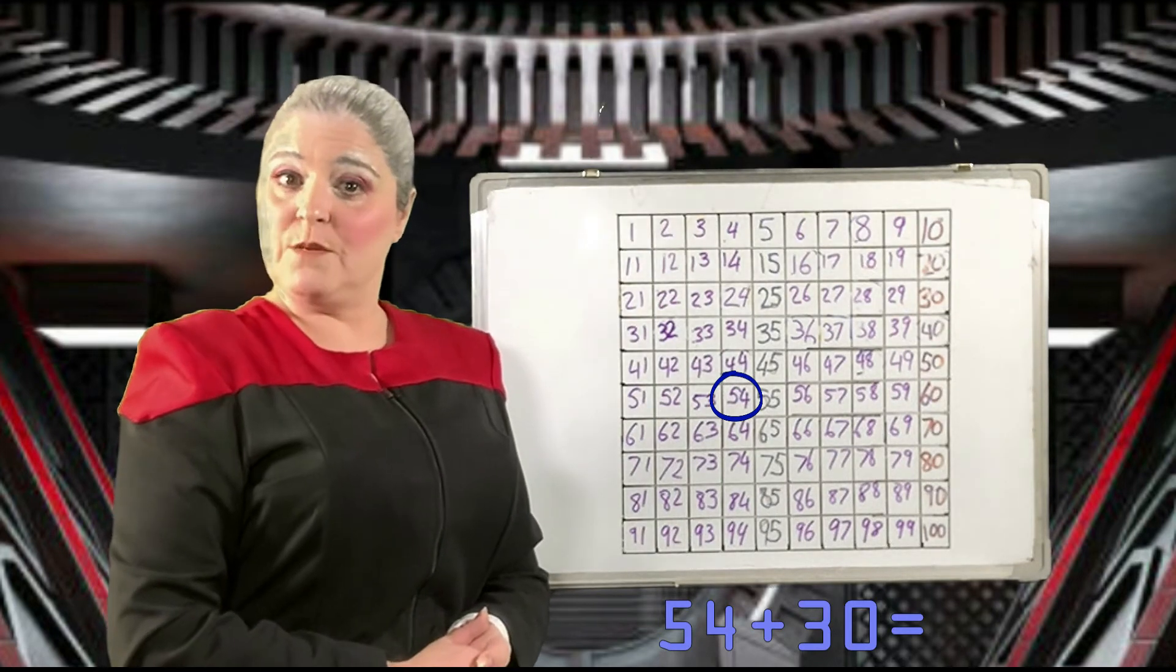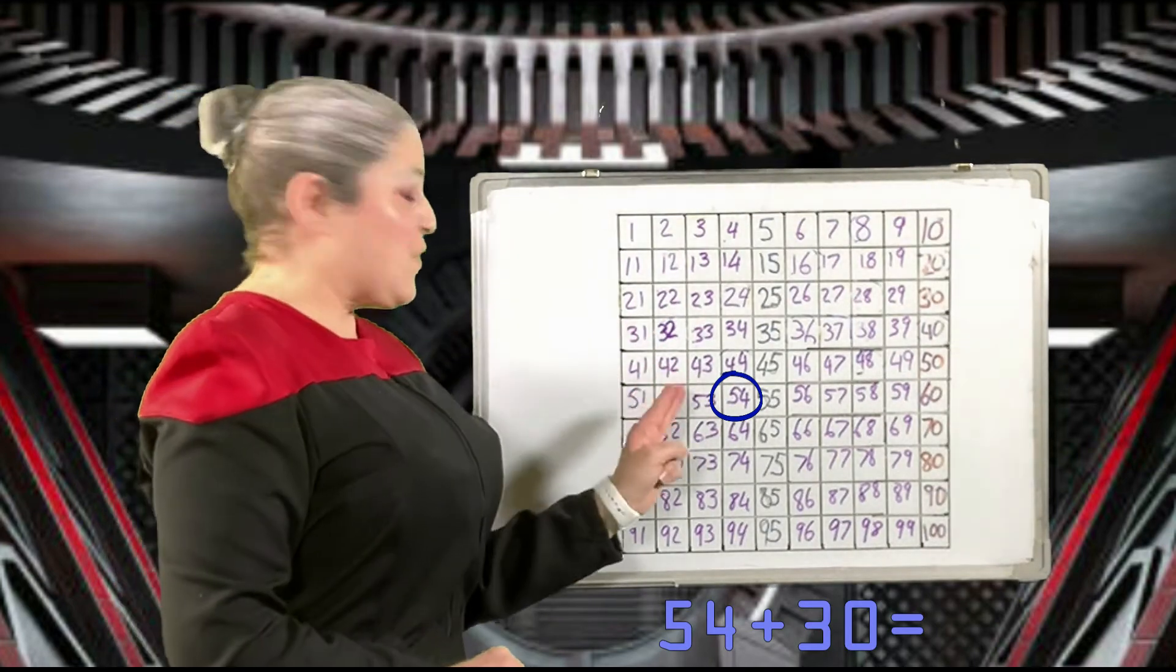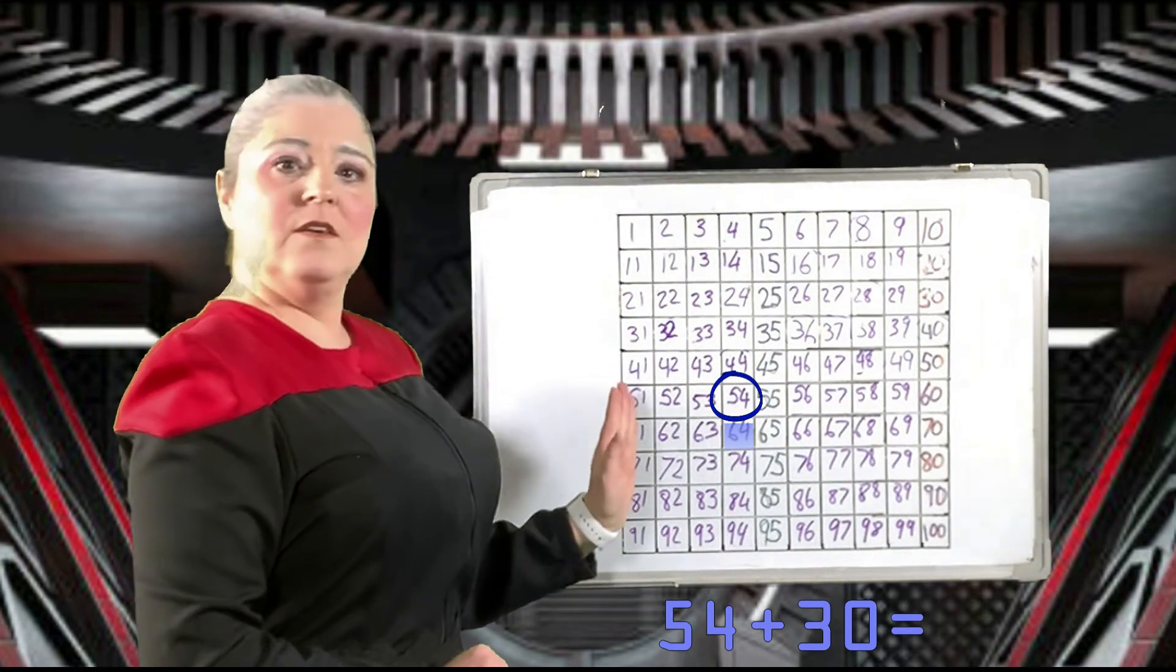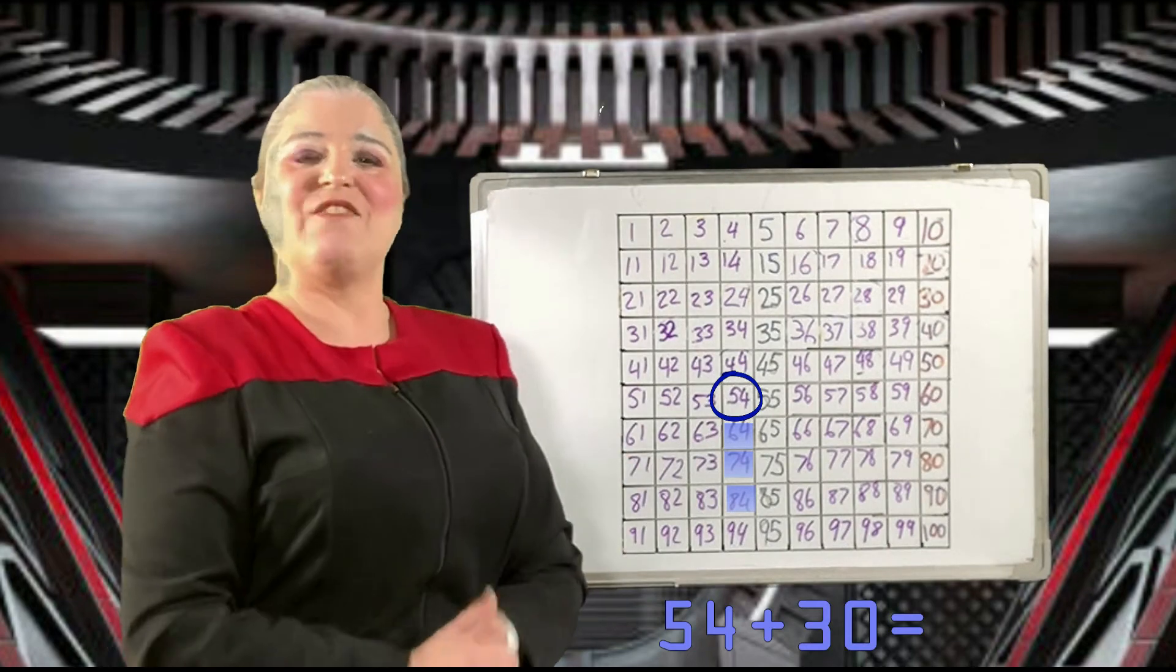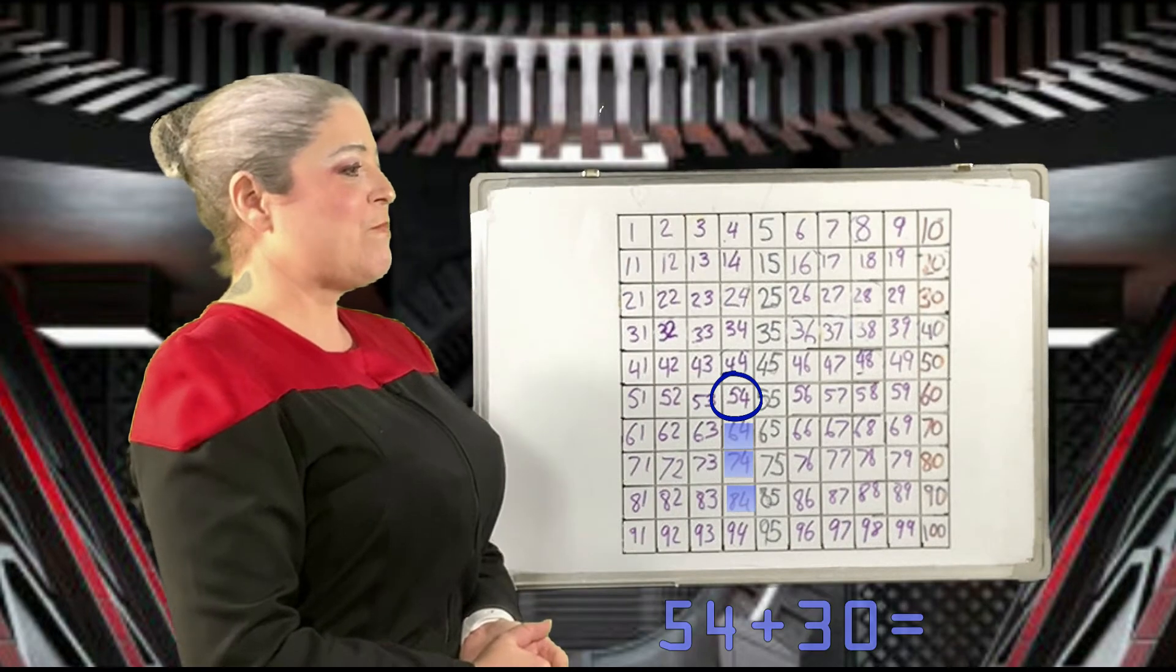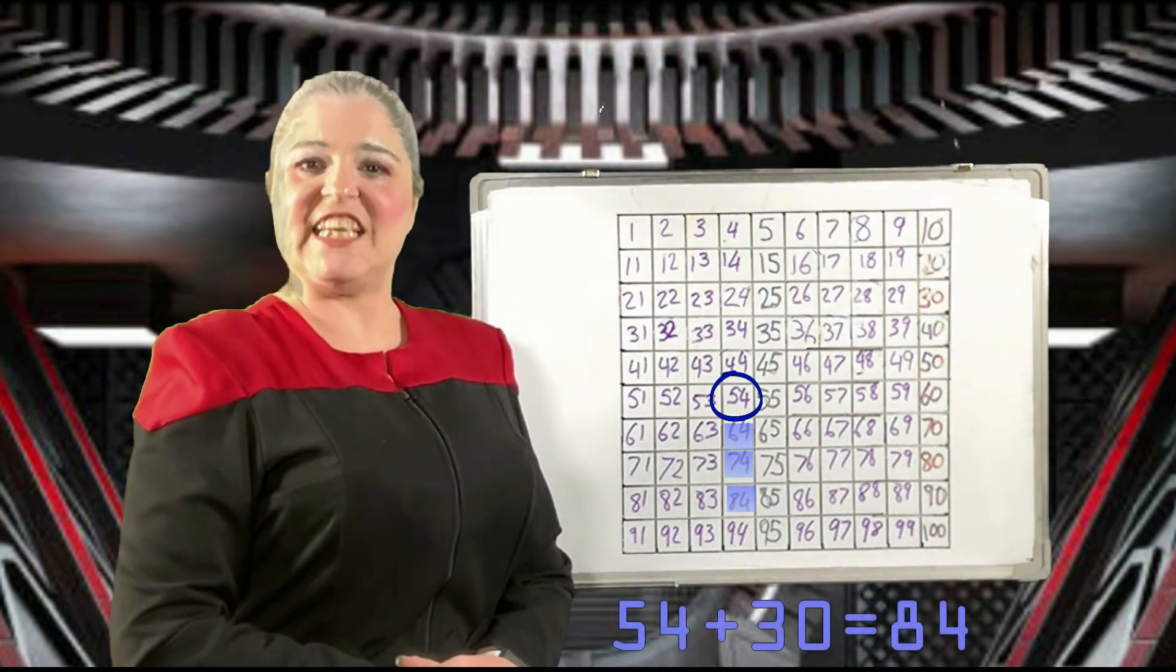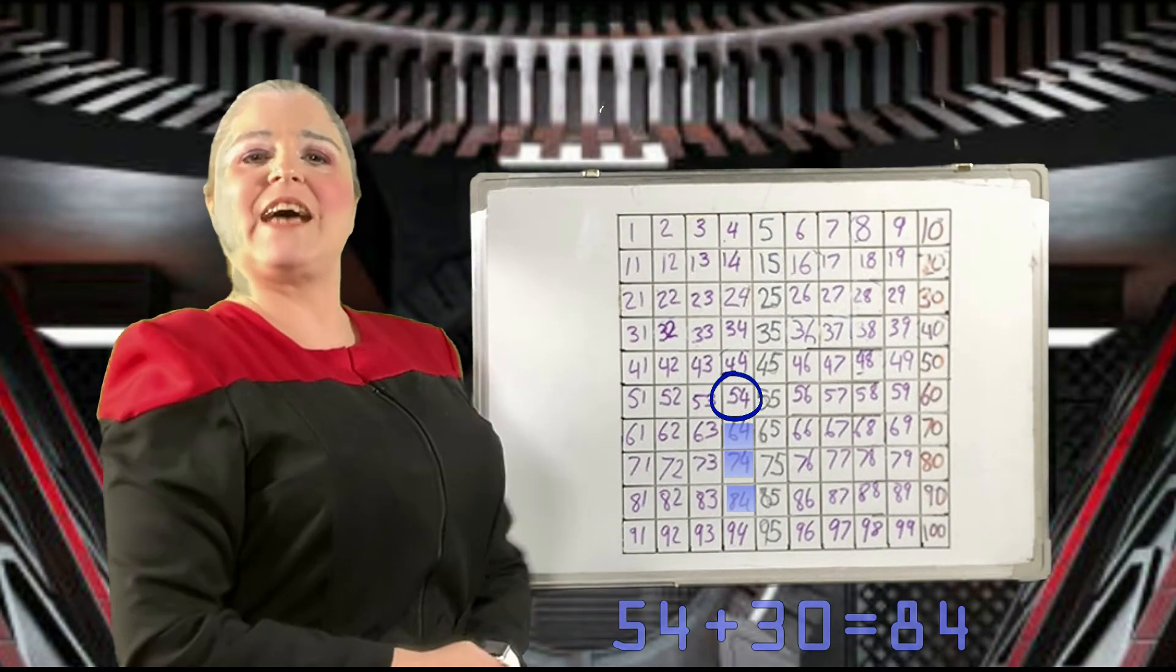Have you done it? Excellent. Moving three squares straight down your number square: one, two, three, you should have landed on the number 84. 54 plus 30 is 84. Well done.